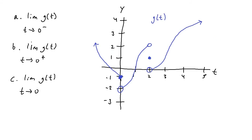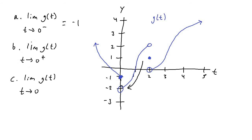Moving on to the second set of problems — the same process, but instead of f of x we have g in terms of t. For the limit of g of t as t approaches zero from the negative direction or left-hand side, as t approaches zero from the left the y value is negative one, so the limit is negative one. For the limit of g of t as t approaches zero from the positive direction, from the right-hand side the limit approaches the y value of negative two, even though there is a hole at that value.